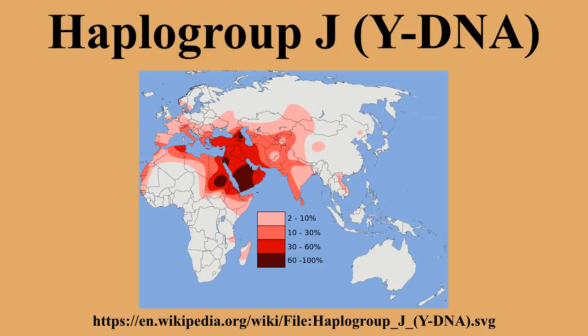JM304 is defined by the M304 genetic marker, or the equivalent 12F2.1 marker. According to a genetic study in China by Shoei et al., JM304 is found among the Sibe people, Kazakhs, Dongxiangs, and Uzbeks in Northwest China.